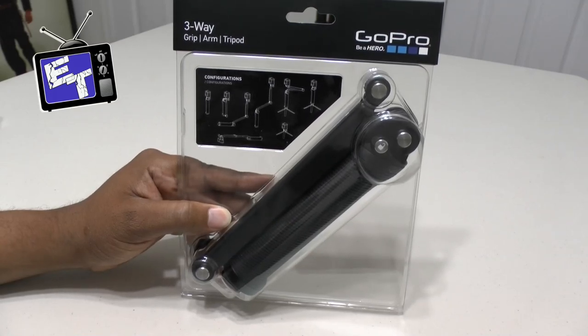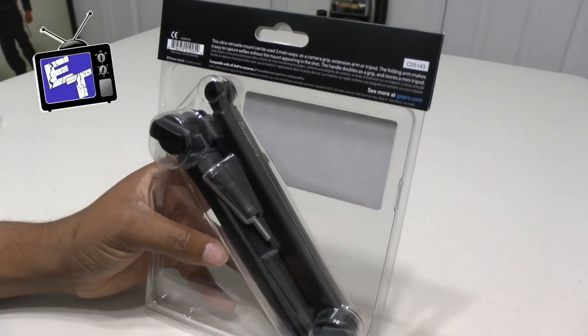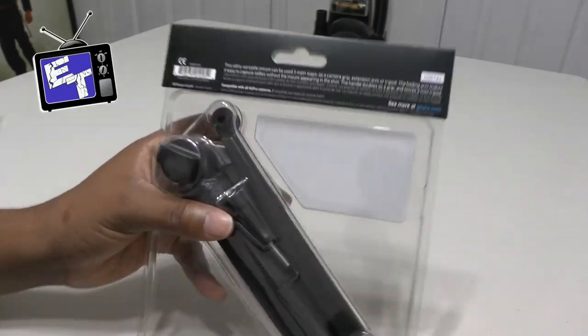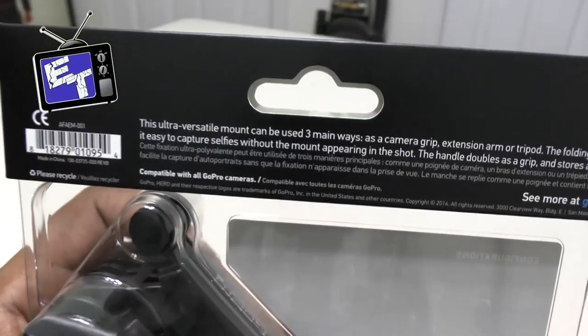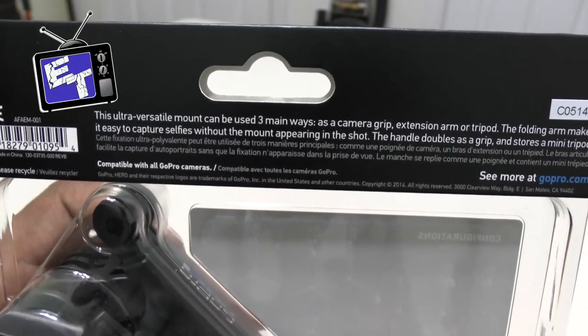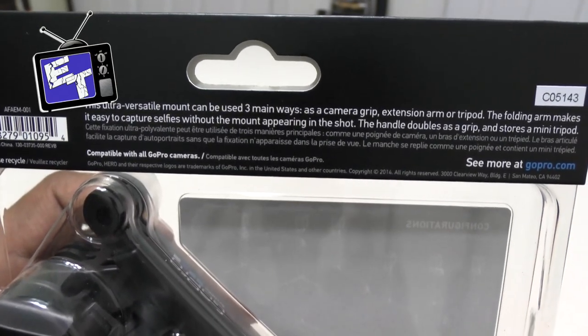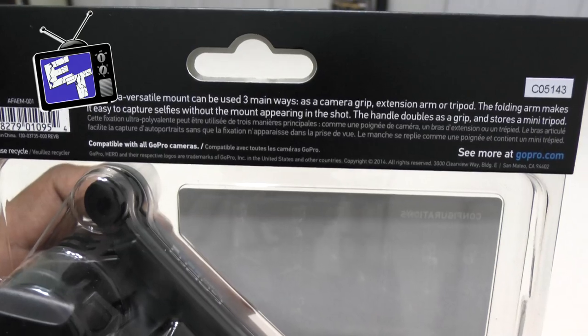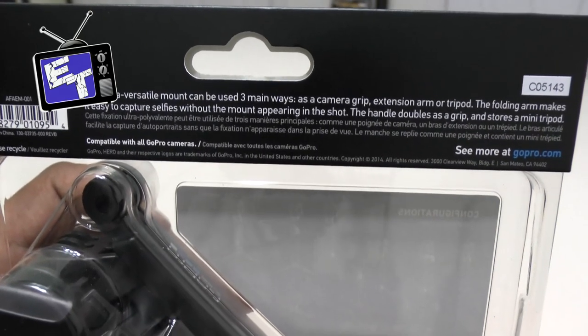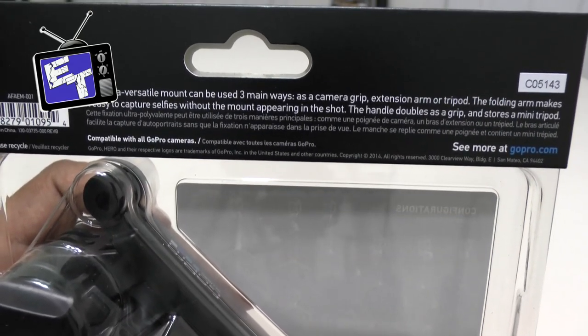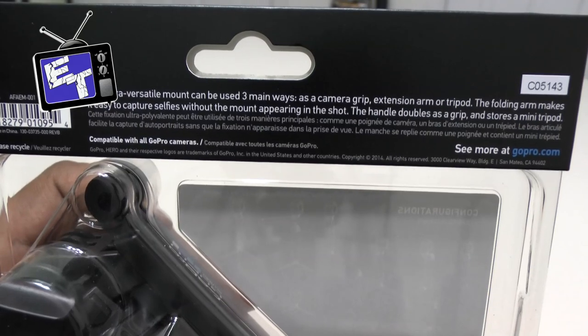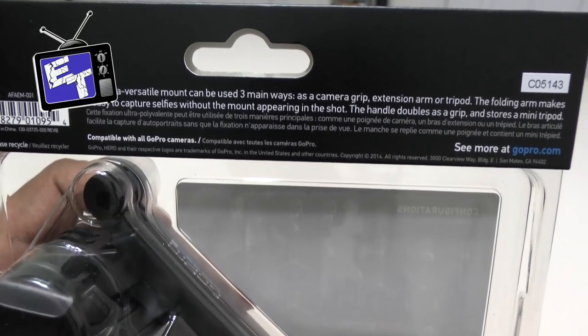Which is expensive in my opinion for a GoPro accessory, but we're going to take it out of the packaging, run it through its paces, and see if it's worth your 70 bucks. On the back here it says this ultra versatile mount can be used three main ways: as a camera grip, extension arm, or tripod. The folding arms make it easy to capture selfies without the mount appearing in the shot. The handle doubles as a grip and stores a mini tripod.